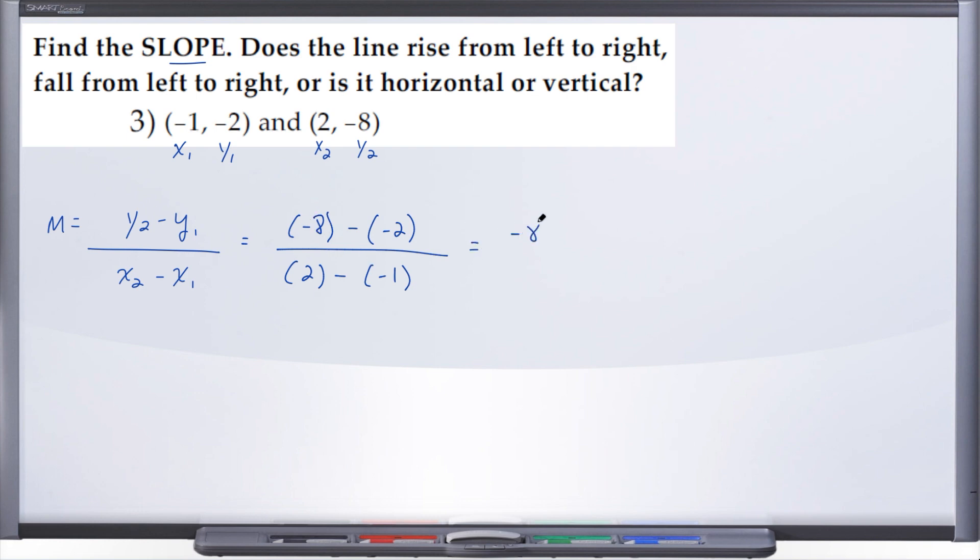So here we have negative 8 plus 2, so you can see why it might be helpful to use parentheses because when you distribute that negative through, a negative times a negative gives you a positive. So we have negative 8 plus 2, that's going to give us negative 6, over 2 plus 1 is 3. And we can reduce negative 6 over 3 becomes simply negative 2. And so our slope for these two points, or between these two points rather, is negative 2.